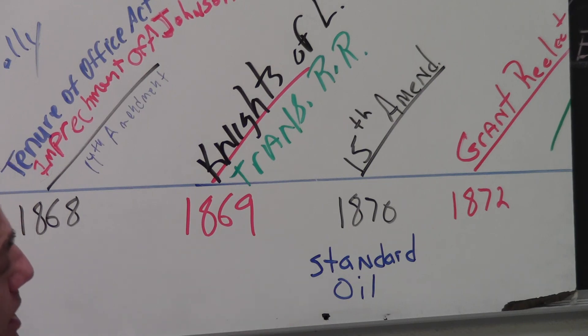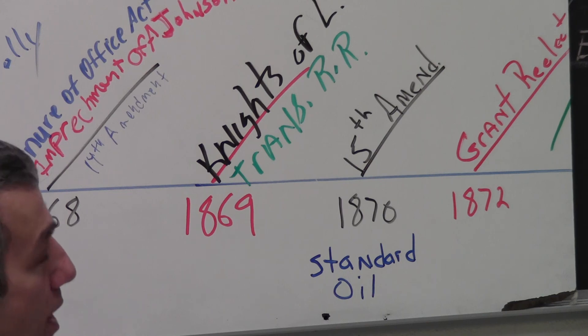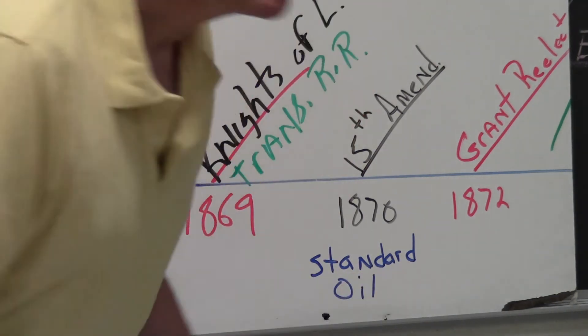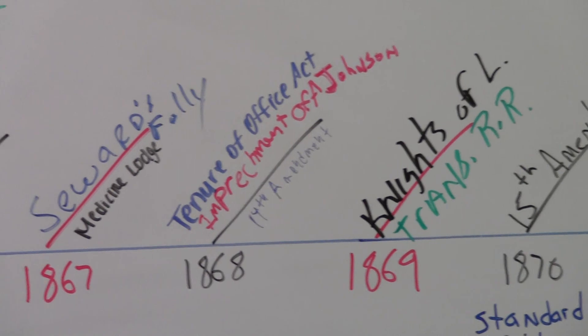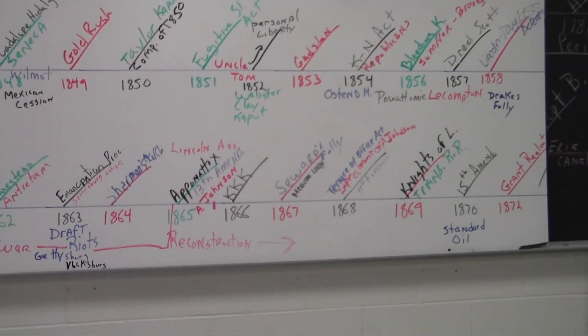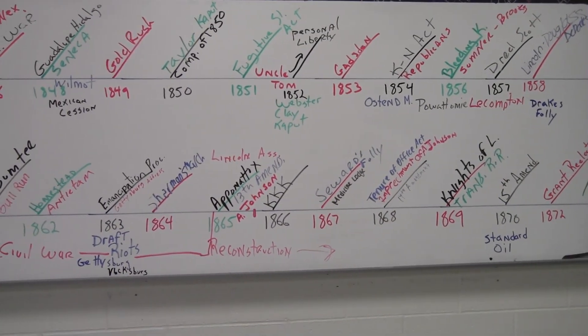Because things appear on the outside to be going fairly well, even though President Grant has had to endure the Credit Mobilier scandal and the Whiskey Ring scandal, he will be re-elected in 1872 as a popular Republican president, and his presidency will continue until 1877 when Reconstruction actually comes to an end and Rutherford B. Hayes takes over.